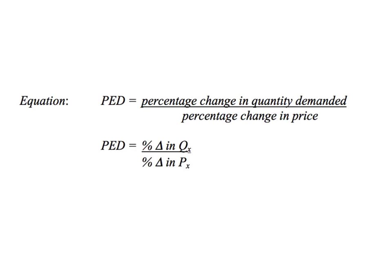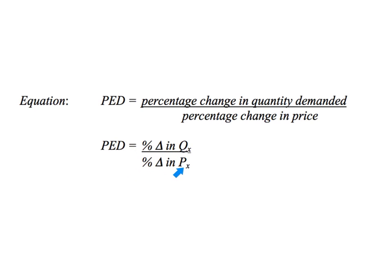So just to review, you've got to take a look at the equation — how do we arrive at a price elasticity of demand? It's pretty straightforward: a percentage change in the quantity demanded of one product over the percentage change in the price of that same product. That equation can be abbreviated as the percentage change in the quantity of X over the percentage change in the price of X.